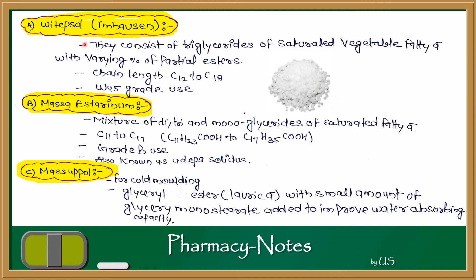Witepsol, also known as Imhaussan, consists of triglycerides of saturated vegetable fatty acids with varying percentages of partial esters. It has triglycerides of saturated vegetable fatty acids with different percentages of esters. According to molecular weight, the chain length is carbon-12 to carbon-18, and the W-45 grade is commonly used. Synthetic fat is solid in nature so it can be given a suppository shape.